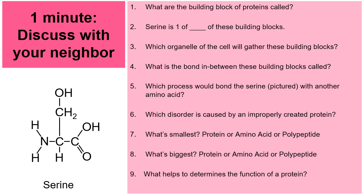So number one, what are the building blocks of proteins? Well, those are the amino acids. In the picture, there's one amino acid named serine. Serine happens to be one of 20 of these building blocks. The third one, which organelle of the cell will gather these building blocks? Well, that's the ribosome. What's the bond in between these building blocks called? That's a peptide bond. Which process would bond the serine that's pictured with another amino acid? Well, that would be dehydration synthesis.